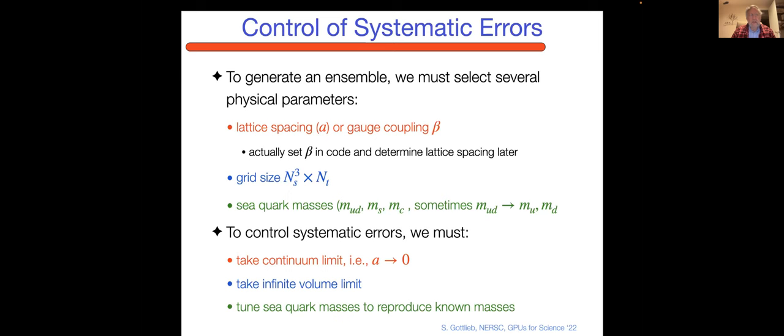To carry out a physics measurement, you have to control systematic errors. To generate an ensemble, you have to make some choices. You have to decide on a lattice spacing, the smaller the better. You set the strength of the gauge field coupling and determine the lattice spacing later. You have to put the system in a finite size box. Then there are the quarks. We put in the up and down quark, which are the lightest ones, the strange quark and the charm quark. We don't generally put the bottom quark or the top quark because they're so heavy compared to the QCD scale.